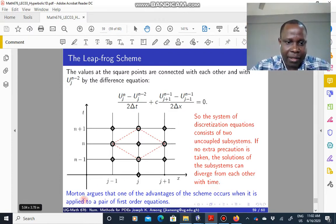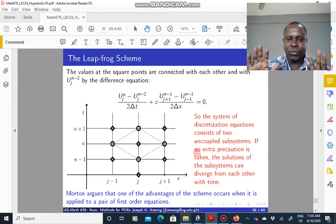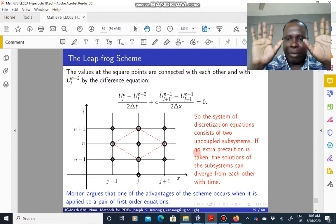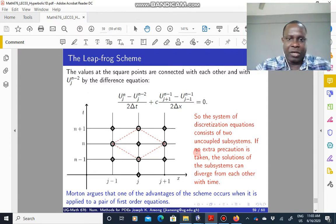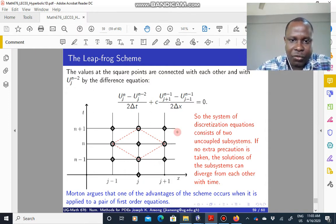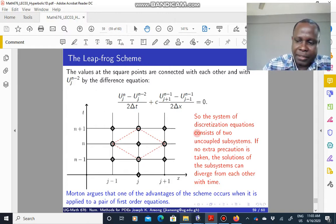So Morton and Myers actually argues that one of the advantages of this scheme, despite all these disadvantages, is that it is very useful when you apply it to a pair, like a system of first order equations. If you have a pair of first order equations, then this usually is very powerful. So that is one system that you could take a look at, the leapfrog scheme.